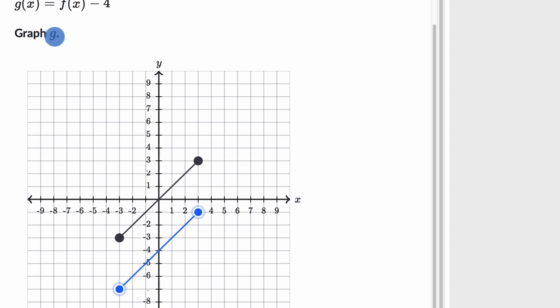So we have now graphed g, and as you can see, if you take f(x) and you subtract four from it, you have just shifted the whole graph down by four.